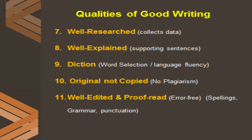Number seven: well researched — collects data. A writer should collect data and see what has already been written or what is in the contemporary literature about that topic. If research is there and the data is new, that means it is going to be good writing. Number eight: well explained — sporting sentences. Every paragraph and sentence should support the main idea. If ideas are well explained to the readers, it is good writing. Number nine: diction — word selection and language fluency. A good text should have perfect word selection and language fluency, with flow in the writing.